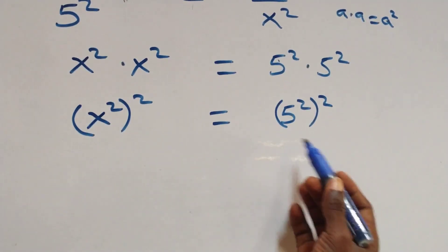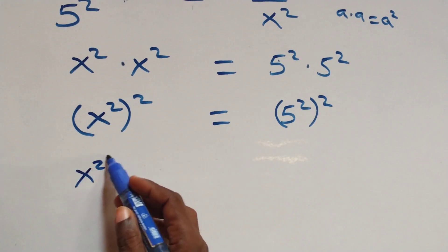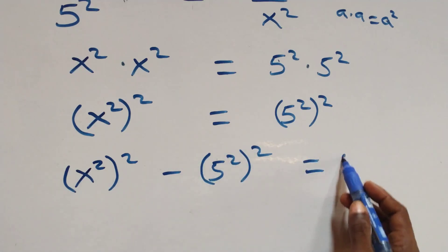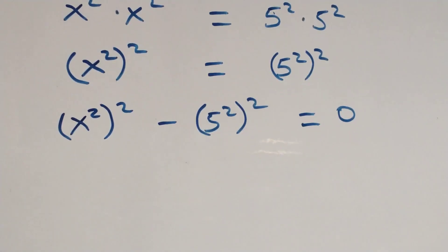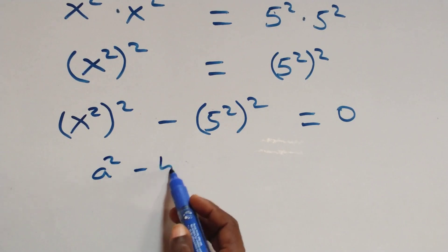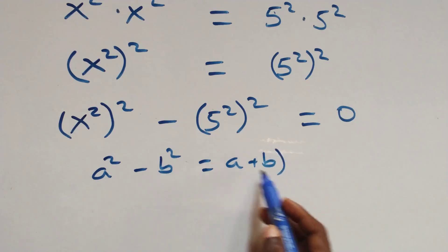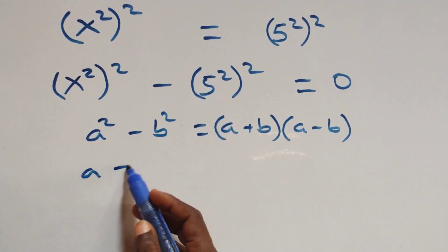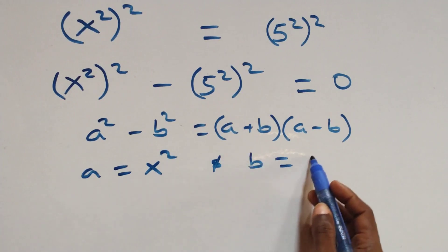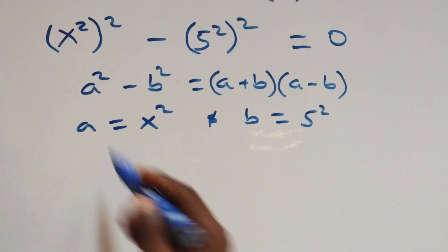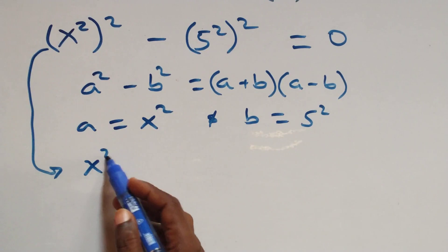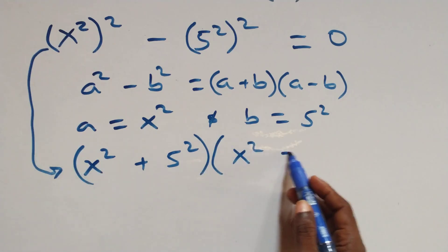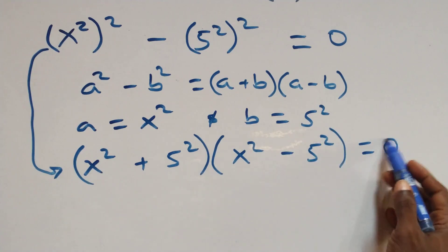The next step: we take the right hand side to the left hand side, giving us x⁴ minus 5⁴ equals zero. This follows the difference of squares: a² minus b² can be written as (a + b)(a − b), where a stands for x² and b stands for 5². So it becomes (x² + 5²)(x² − 5²) = 0.